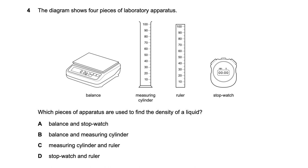The diagram shows a balance, measuring cylinder, ruler, and stopwatch. The question asks which apparatus is used to find the density of a liquid. Density equals mass divided by volume, so we need to measure mass and volume. For a liquid we use a balance to find mass and a measuring cylinder to find volume. So balance and measuring cylinder — option B — is the right answer.